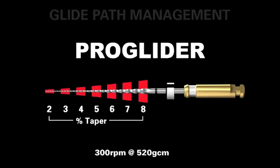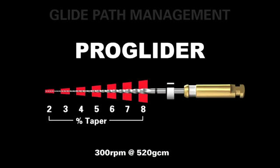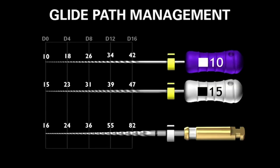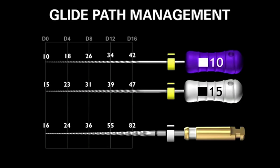Looking at the cross-sectional geometries of various instruments every 4 millimeters up the active portion, it's interesting to compare the ProGlider with the white 15 hand file. The ProGlider is virtually the same in the front end, but the cross-sectional geometries differ significantly at D8, D12, and D16 — one ProGlider can make a significantly bigger pathway than a single 15 file. The new proposal is: use the 10 file to catheterize and secure the canal, then expand that glide path with one single ProGlider.